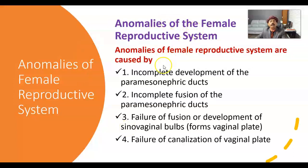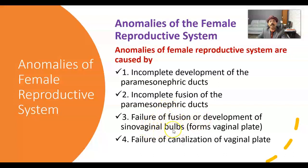The anomalies of the female reproductive system are caused by incomplete development of the paramesonephric ducts, incomplete fusion of the paramesonephric duct, failure of fusion or development of the sino-vaginal bulbs that form into the vaginal plate, and failure of canalization of the vaginal plate.